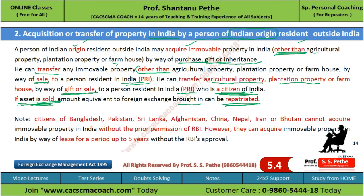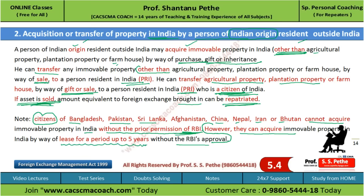There is an important point here that cases can come on. Citizens of Bangladesh, Pakistan, Sri Lanka, Afghanistan, China, Nepal, Iran, and Bhutan cannot acquire immovable property in India without specific prior permission of RBI. However, these people can acquire immovable property in India by way of lease for a period up to five years without RBI approval. So for direct acquisition, RBI permission is needed, but for a five-year lease, RBI permission is not required - cases can directly come on this.